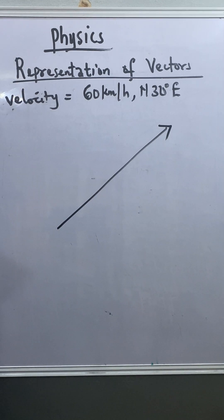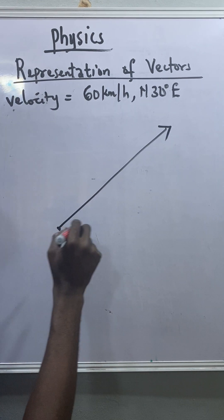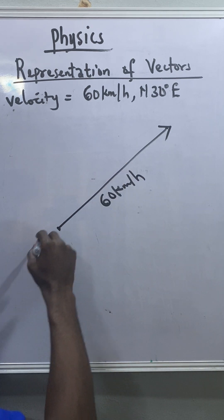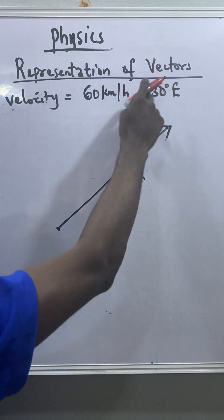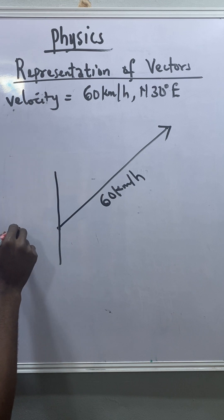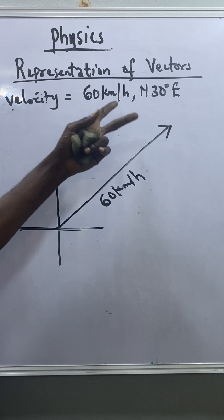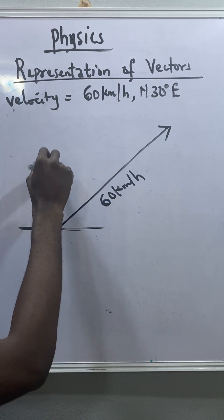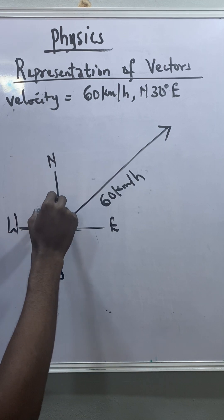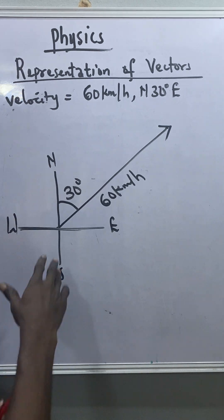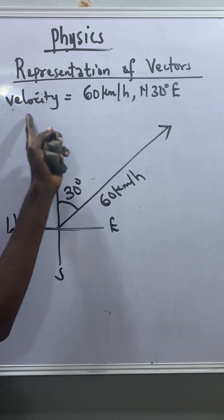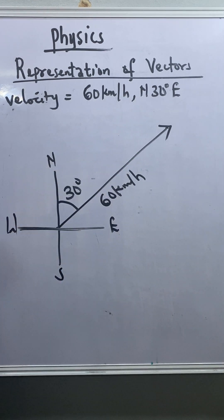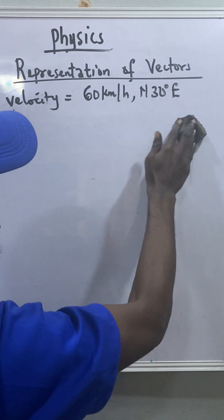We place an arrowhead on top of the line. The length of the line from the tail to the head represents the magnitude, which is 60 kilometers per hour, and the direction the arrow is pointing represents the direction of the vector. I can draw four cardinal points to it — this is east, this is south, this is west — and put the 30 degrees here. So this entire arrow represents the vector of 60 kilometers per hour north 30 degrees east.